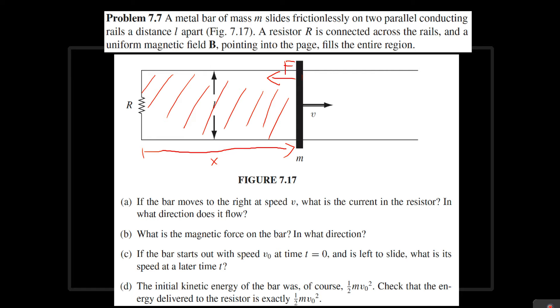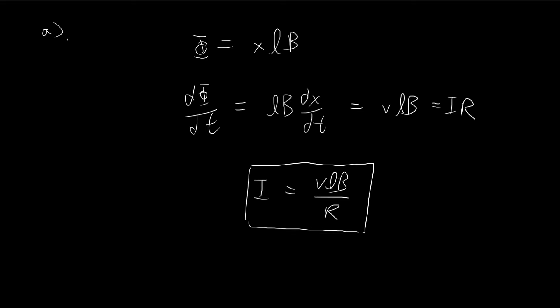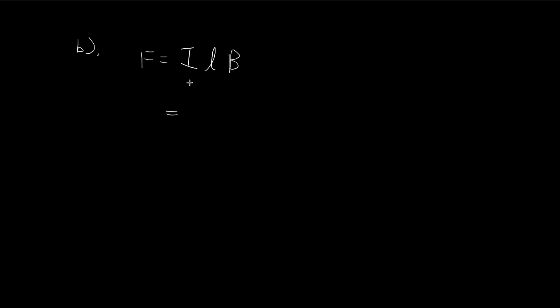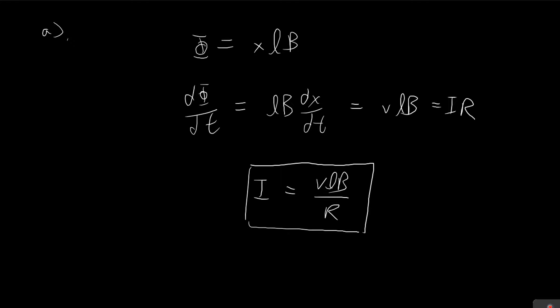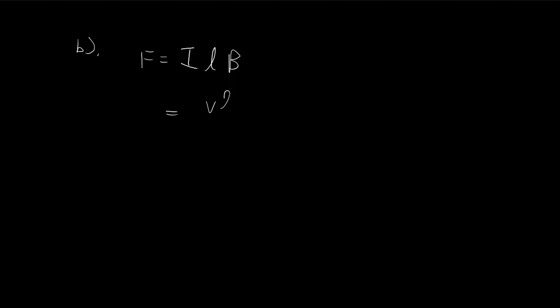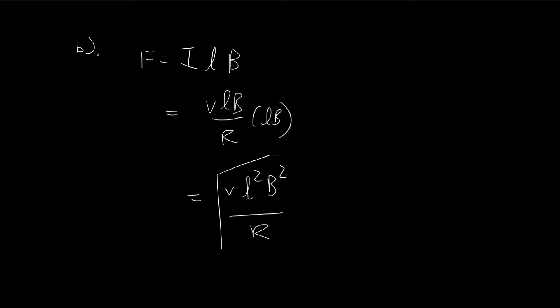So what exactly is the magnetic force? For part B, the magnetic force: now we have a current, so we need to use the formula. The force is equal to the current times the length — so the length here is L — times the magnetic field. So substituting our expression, we know I is equal to VLB divided by R, multiplied by LB. So the force is equal to VL²B² divided by R. This is the answer for part B.